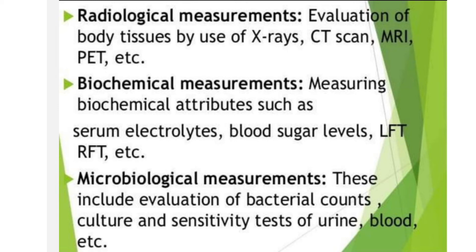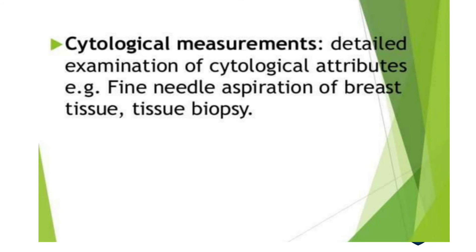Microbiological measurements include culture and sensitivity tests of urine, blood, throat swabs, sputum, and bacterial counts to identify different bacteria or viruses. Cytological measurements involve identifying any abnormalities in the cell — for example, FNAC (fine needle aspiration cytology) in case of tumors, or sending tissue biopsy for histopathological examination to identify squamous cell carcinoma, adenocarcinoma, or other cell structure abnormalities.